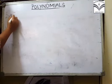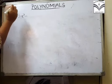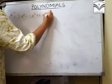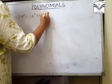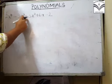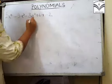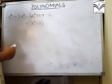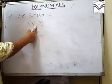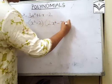Aapka 2x⁴ - 3x³ - 3x² + 6x - 2. So aapka quotient hai 2x² - 3x + 1.